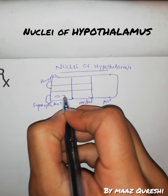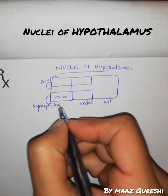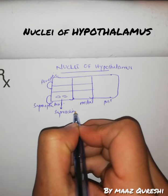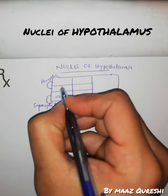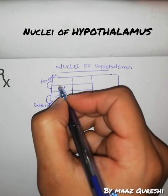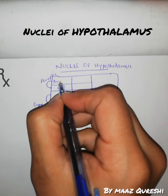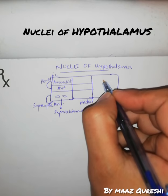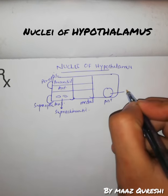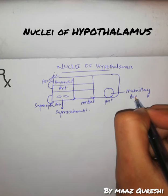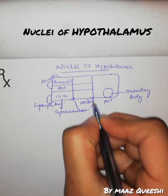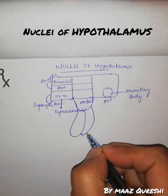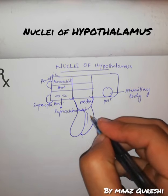Here we will mark the supra-optic nucleus, which is related to the eye. We have the anterior hypothalamus and the paraventricular nucleus. There is also a very important structure called the mammillary body, and here we have the median eminence with anterior and posterior hypothalamus, plus the capillary plexus.